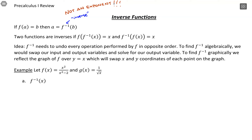Switching input and output values means that if you're working with graphs, the graph of the inverse comes through as a reflection over y = x. That can be pretty hard to visualize. Instead, you can think of it as: if you have your original function f(x), you're just switching your x and y coordinates. Take all of your original coordinates, switch them, and then graph those new coordinates.